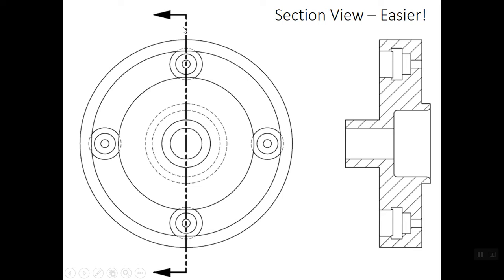So for this object, if we were to slice it in half from the top quadrant through the bottom quadrant, right where that dark, heavy, cutting plane line is indicated. And if we were to look in the direction of these arrowheads,